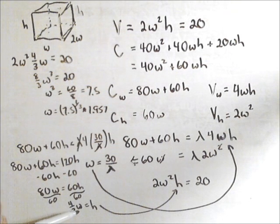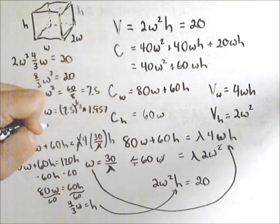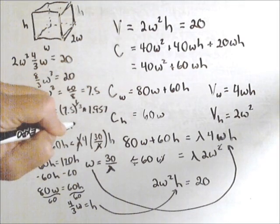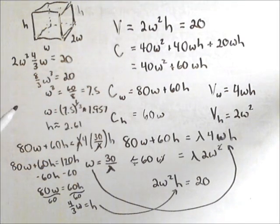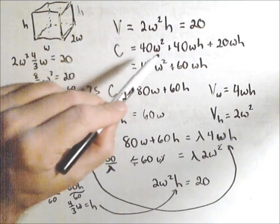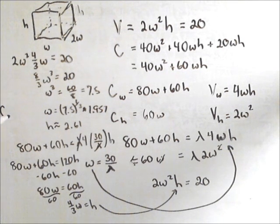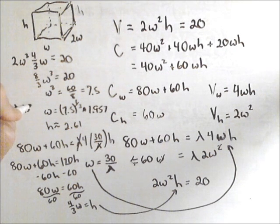Now that we know W, we can find H, because it's just 4 thirds of that, and so we get that H is roughly about 2.61. Now we can plug those values into our cost function to get our cost, which, if you calculate that out, you get roughly about 459.79.